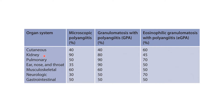This slide lists the extra-renal symptoms in patients with the three types of ANCA-associated vasculitis: microscopic polyangiitis, granulomatosis with polyangiitis, and eosinophilic granulomatosis with polyangiitis. The frequencies of organ system involvement differ in percentage among the three disease types.